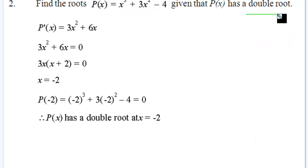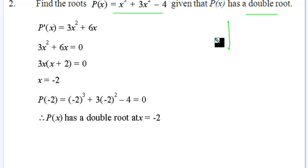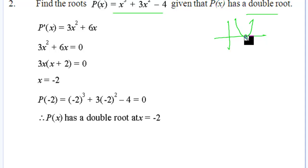Now, using the idea that P(x) has a double root to find the roots. If it's a double root, then the function itself and the first derivative have a root that is the same. The idea is that when we derive it, we have a root that is also a turning point — where the first derivative equals zero — and it also touches the x-axis, so it's a turning point on the axis.